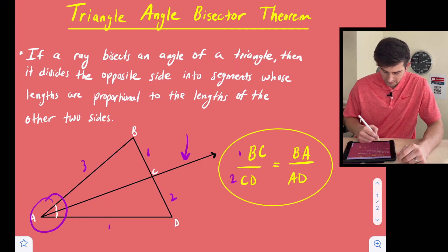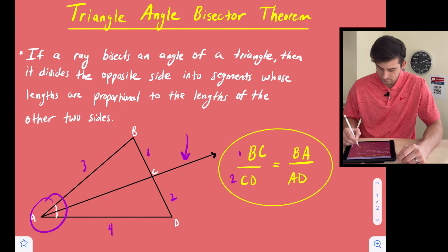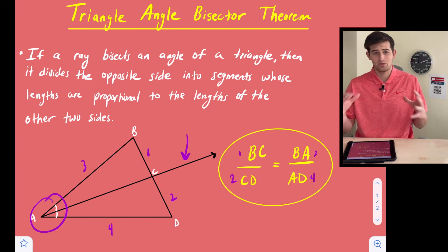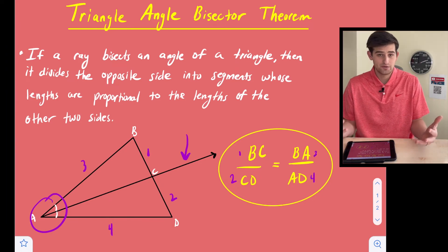So B, A would be here, and A, D would be right there, okay? So that's the proportion that we can set up in order to solve some missing measures.